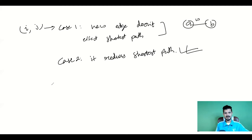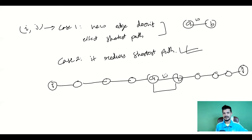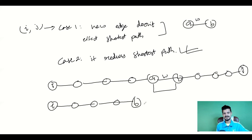So node i has some chain of nodes, then there is node a, then node b, then another chain of nodes, and finally node j — the edge must appear in the shortest path. Or it can be the other way: i, then a chain of nodes, then b first and then a — since this is an undirected edge it can be either b-a or a-b — and then another chain of nodes and finally node j. These two are the possibilities for case two.